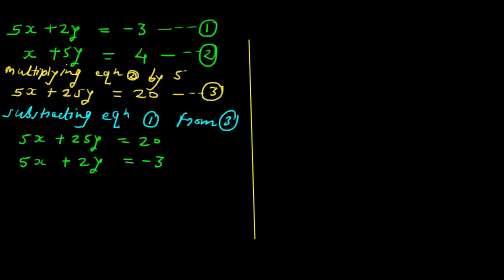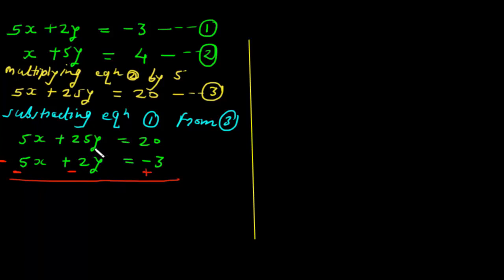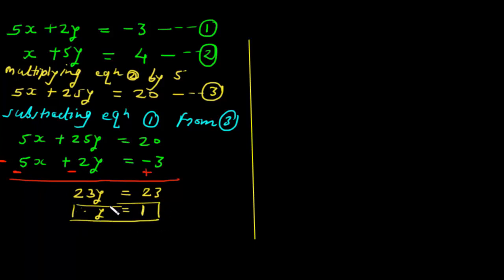When we do the subtraction, the signs will change — plus becomes minus, and minus becomes plus. So 5x minus 5x cancels, and 25y minus 2y gives 23y equals 20 plus 3, which is 23. Therefore y equals 23 divided by 23, which equals 1.